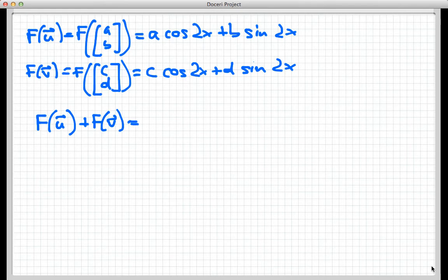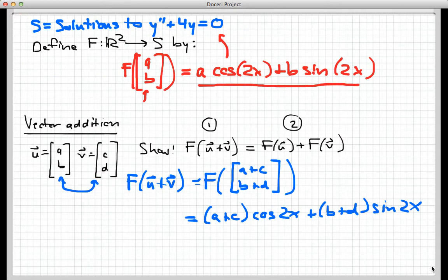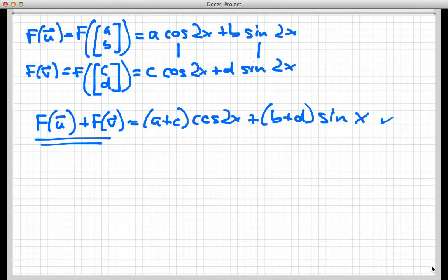Just to add these two together, and what you notice here is I'm going to be adding like terms - the cosine stuff together and the sine stuff together. That gives me (a+c)·cos(2x) + (b+d)·sin(2x). That's the end of stage two. I notice that F(U) + F(V) is indeed equal to F(U+V). So we are all good in that sense, and vector addition is preserved.